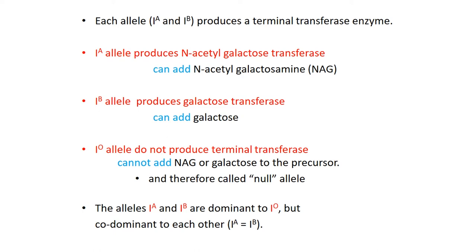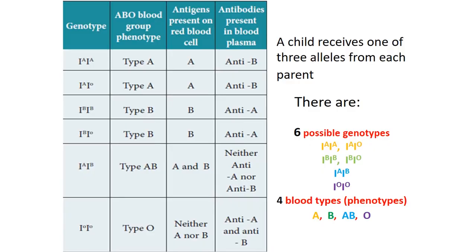IO alleles cannot add N-acetylgalactosamine or galactose to the precursor — that is why IO alleles are called null alleles. Alleles A and B are dominant to allele O. Out of these three alleles, IA and IB are dominant alleles and they are co-dominant to each other. Even though there are three alleles, each child receives only one allele from each parent — that is, each person can carry only two alleles. There are six genotypes determining four blood groups. Blood groups are classified based on the presence or absence of antigen on the surface of RBC, and the corresponding antibodies are present in blood plasma.